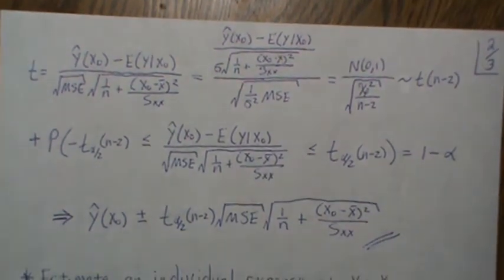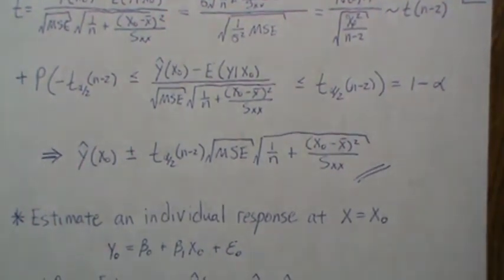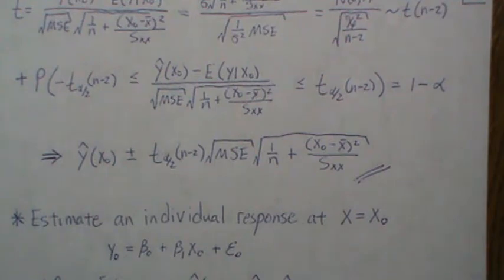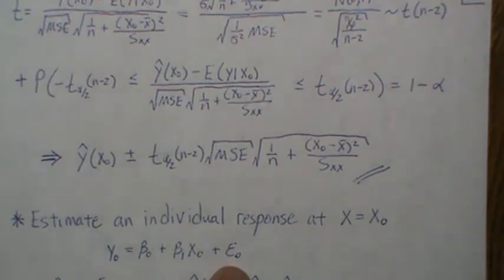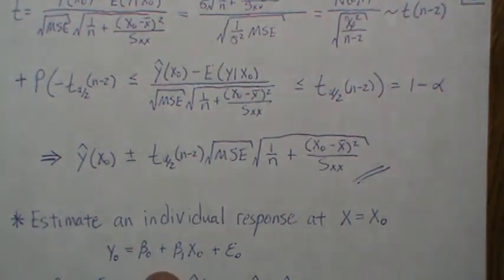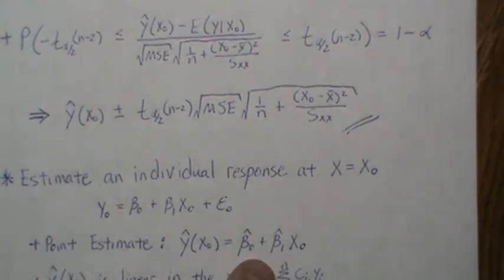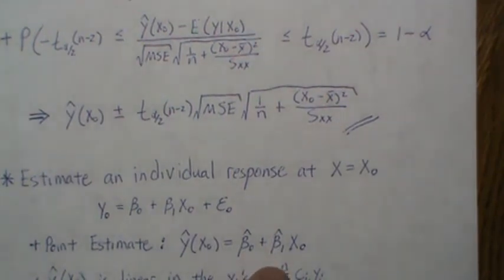Now, to estimate an individual response at x equals x₀. As a reminder, an individual response is y₀ = β₀ + β₁x₀ + ε — it follows the line but is a little bit off due to the error term. That's what we're trying to predict — call it the next y. What do we use as a point estimate? We know it roughly follows the line; on average it follows the line, but it could be above or below. A good point estimate is still the least squares line, because on average we'd get it right — the next y could be above or below, but in the long run it will equal the line.